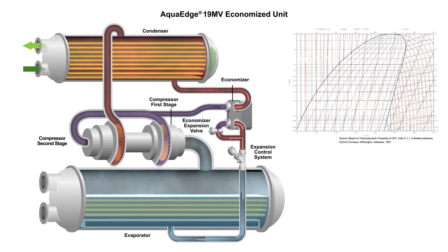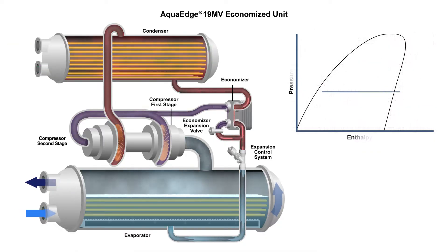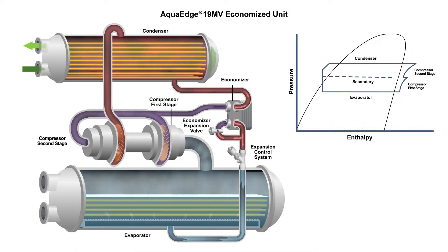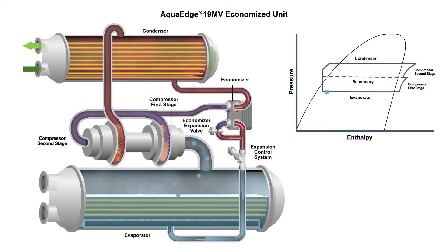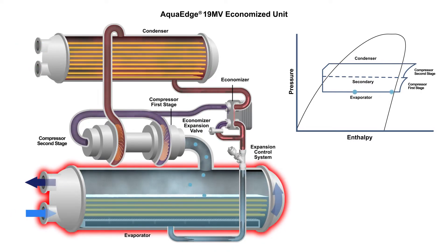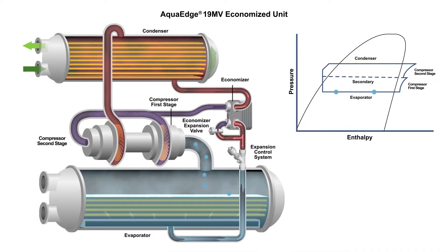The following animation will illustrate the refrigerant cycle and flow sequence for Carrier's economized 19MV water-cooled centrifugal chiller. We begin in the 19MV's evaporator, where refrigerant pressure is reduced by the compressor suction.